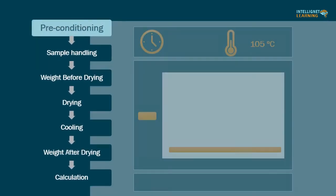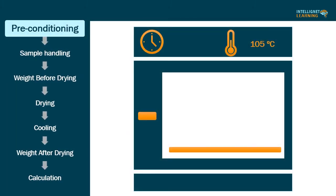How to determine LOD value? LOD determination involves seven steps: preconditioning, sample handling, weight before drying, drying of specimen, cooling, weight after drying, and calculation.